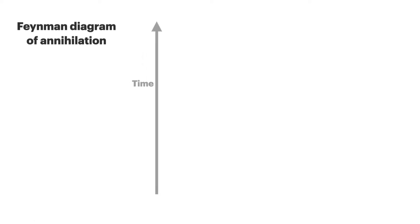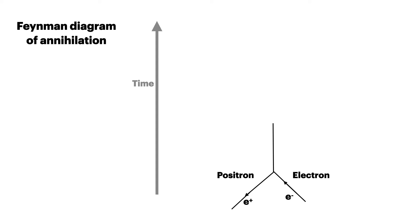Similarly, the Feynman diagram of annihilation shows the sequence where a positron and an electron meet. They annihilate, they destroy each other and produce two gamma photons. Again, note that the arrow on the positron points away from the junction.